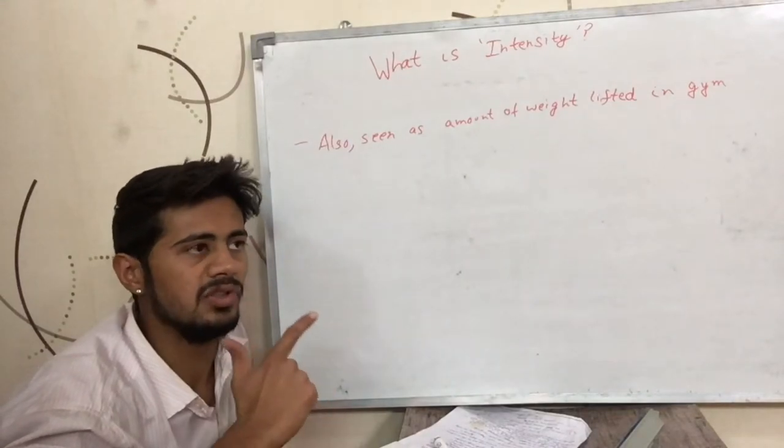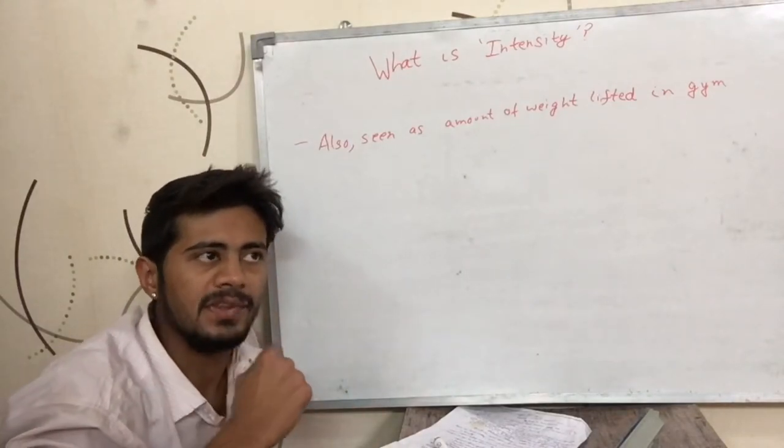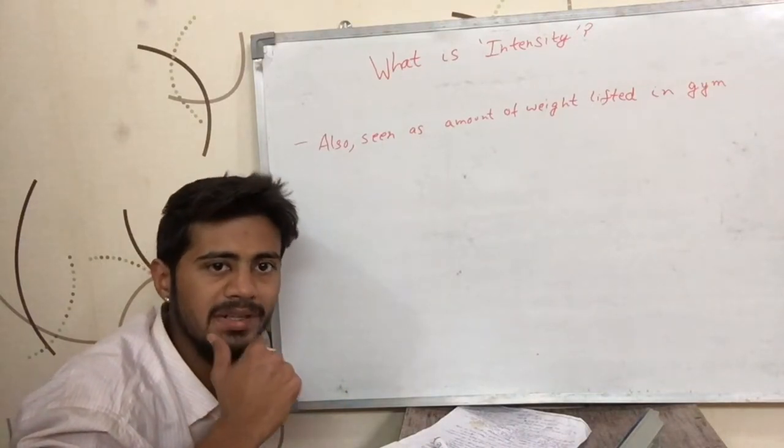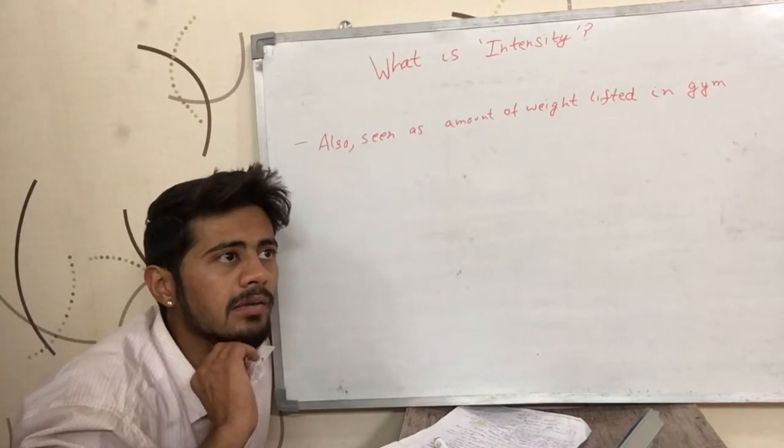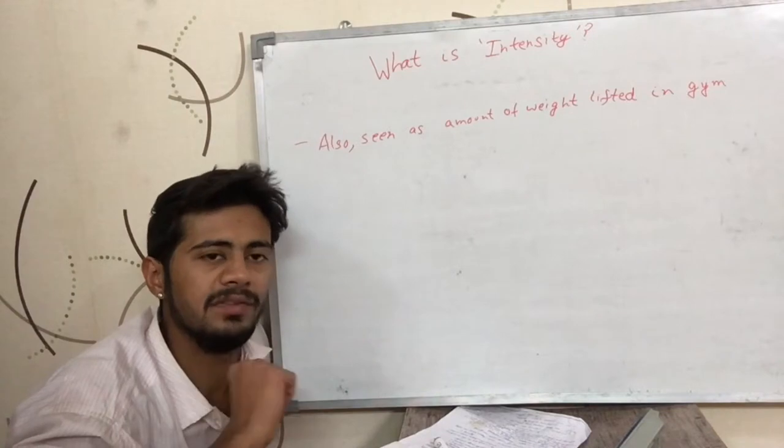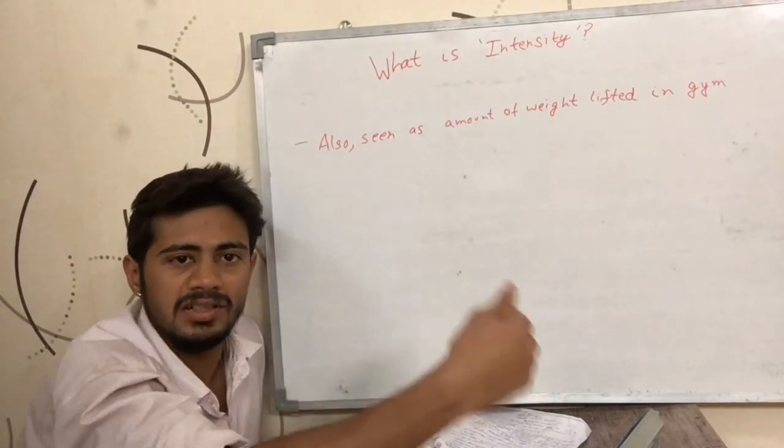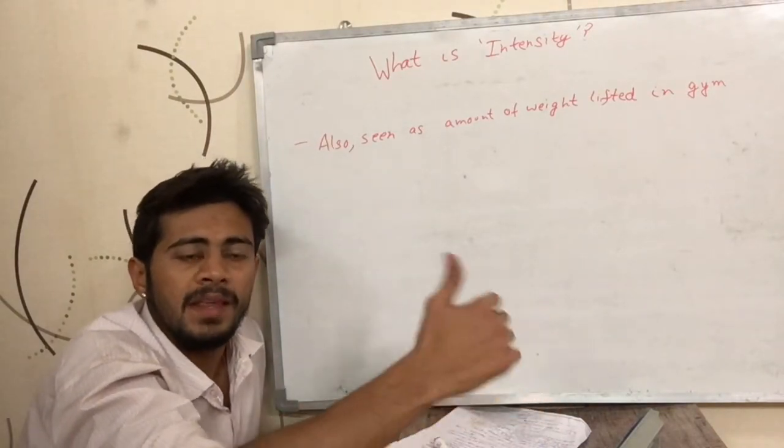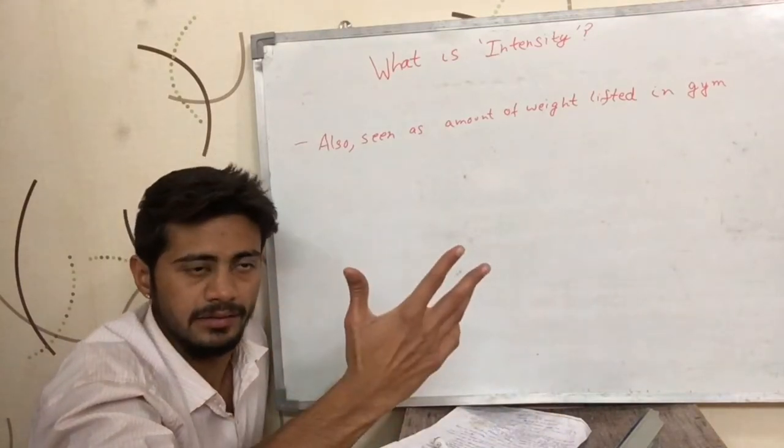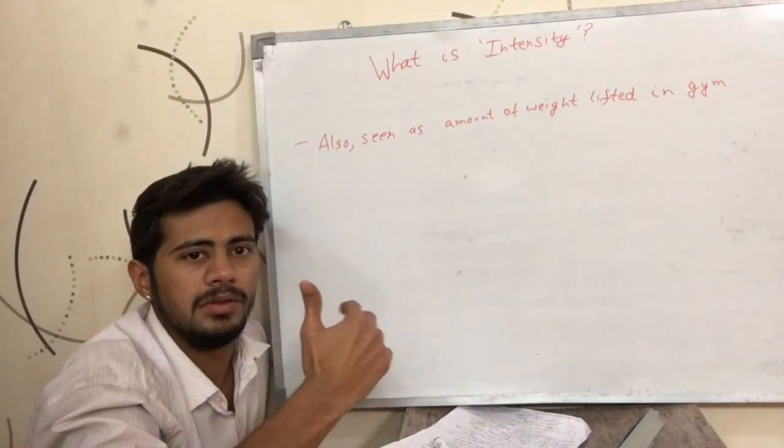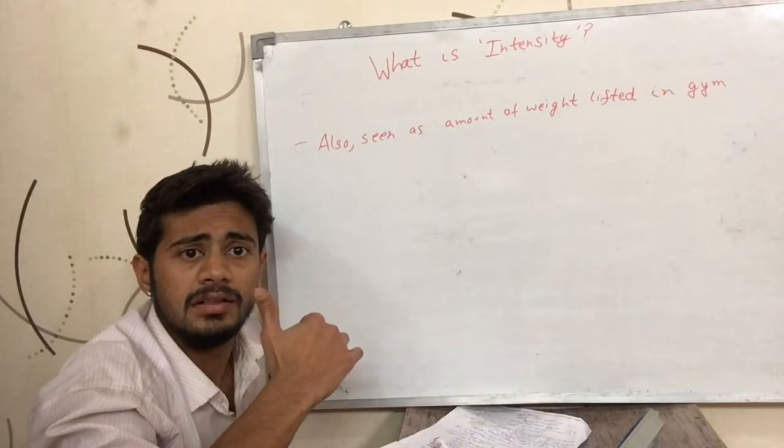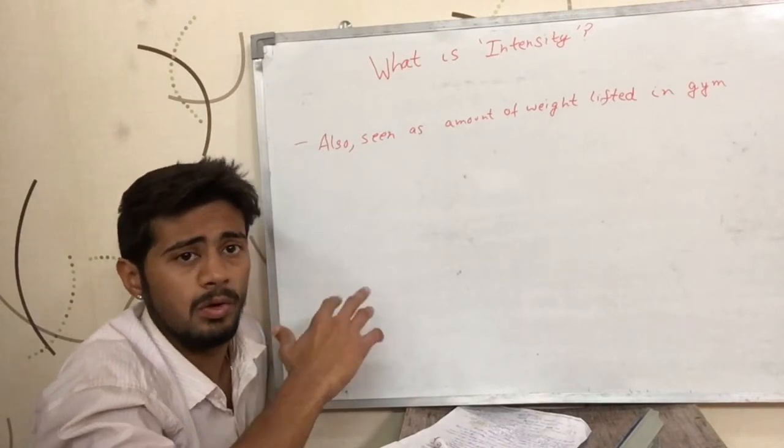Among the gym goers, people doing weight training, you would come across people saying the amount of weight that they lift in the gym as intensity. For example, if I am lifting 10 kg dumbbell and now I lift 15 kg dumbbell, I would say that my intensity has increased. So that is a term usually used when talking about weight training.